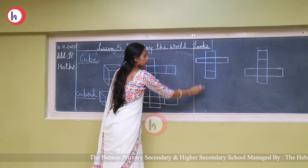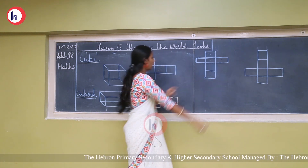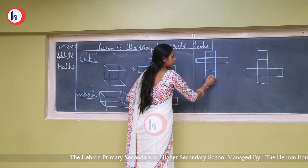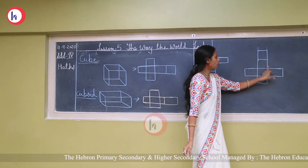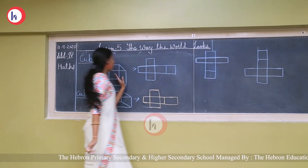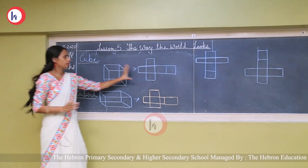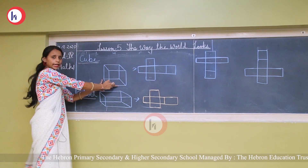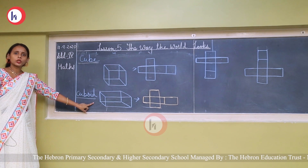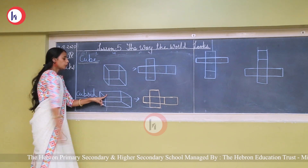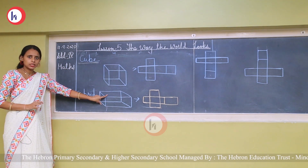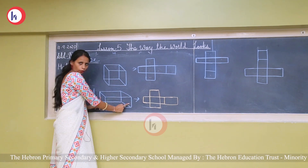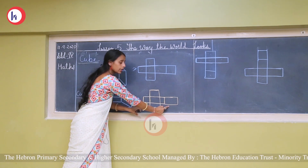The cube can also look like this when unfolded, and this way too. In all cases, there are 6 faces. When we open a cube or any box, it looks like these nets, and when we fold it back, it looks like the cube again. This is a cuboid — it also has 6 faces and 12 edges. When we open this cuboid, it looks like this unfolded net.